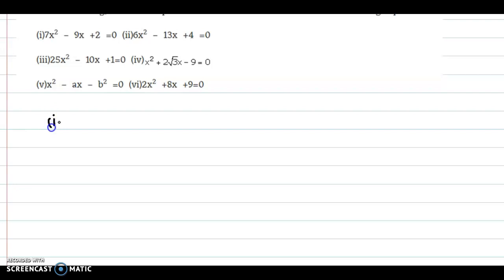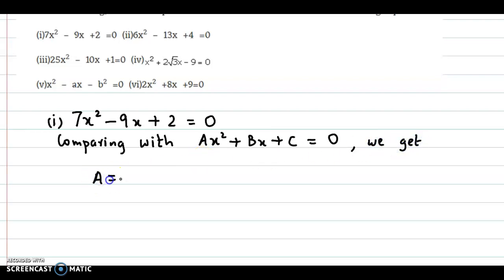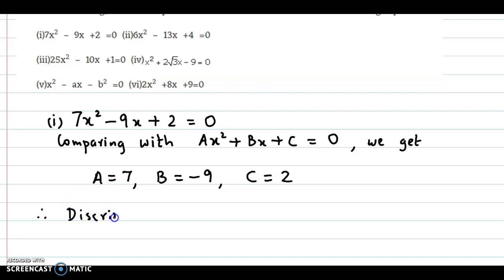The first equation is 7x² minus 9x plus 2 equal to 0. Comparing with the general form ax² plus bx plus c equal to 0, we get a is equal to 7, b is equal to minus 9, and c is equal to 2. Therefore, the discriminant denoted by D is obtained as b² minus 4ac.